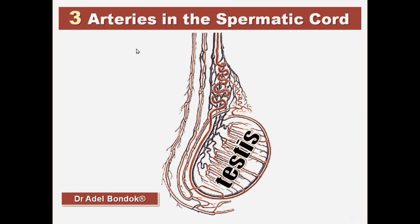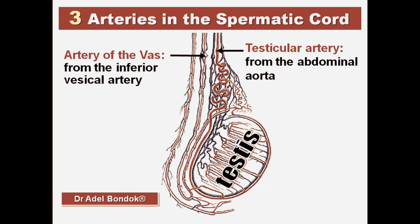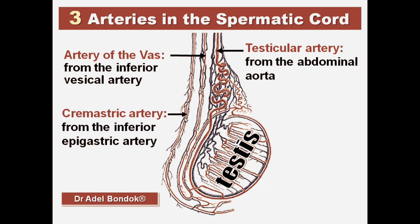What are the three arteries present in the spermatic cord? The first one is the testicular artery, which arises from the abdominal aorta. Then the artery of the vas deferens, which arises from the inferior vesical artery, which is a branch from the internal iliac artery. And then the cremastric artery, which is a branch from the inferior epigastric artery.